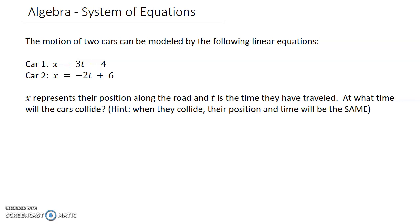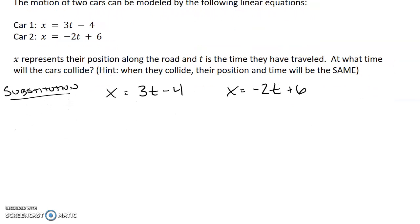So there are three ways that we learn how to solve a system. The first way is called substitution, so I'll solve it with substitution in my first attempt. So in substitution, we have two equations: x equals 3t minus 4, and we have x equals negative 2t plus 6. Substitution is really helpful when you have a variable that's already solved. In this case, x is solved in both equations. So what I can do is take what x is equal to and substitute it into the second equation.